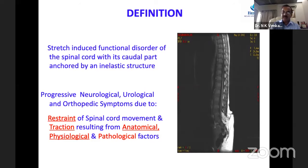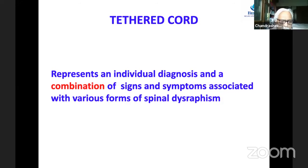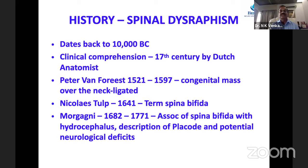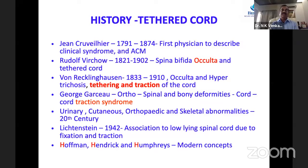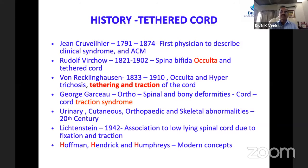Tethered cord represents an individual diagnosis, yet it is a combination of signs and symptoms associated with various forms of spinal dysraphism. The history of spinal dysraphism goes back to 10,000 BC. Spina bifida occulta was first described by Ralph Worko, with the possibility of tethered cord. Von Recklinghausen (1833–1910) described its association with hypertrichosis and was the first to write about tethering and traction.